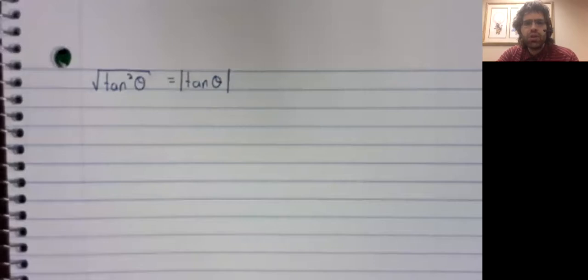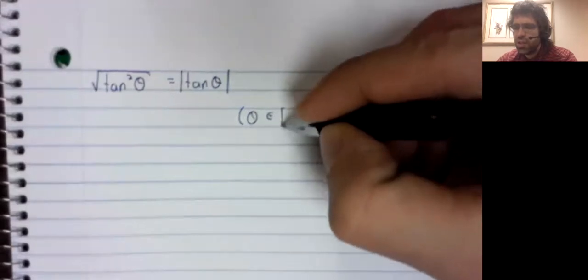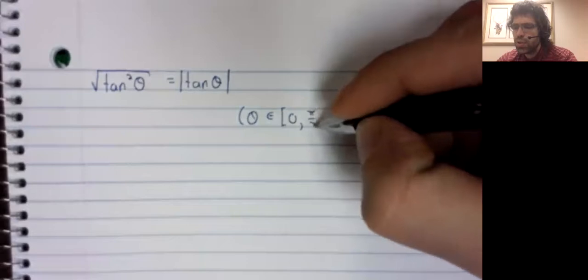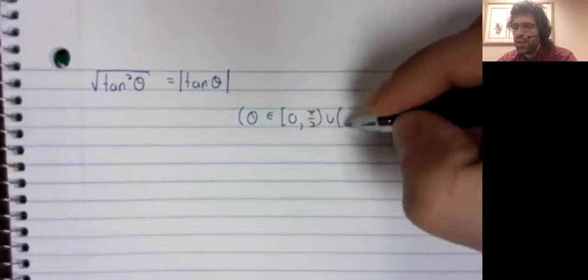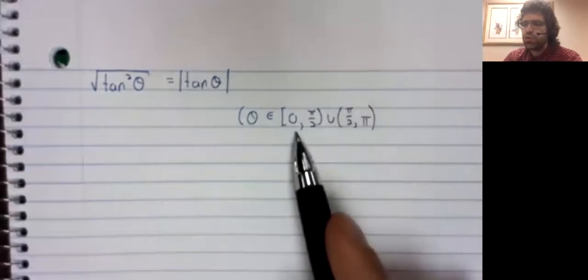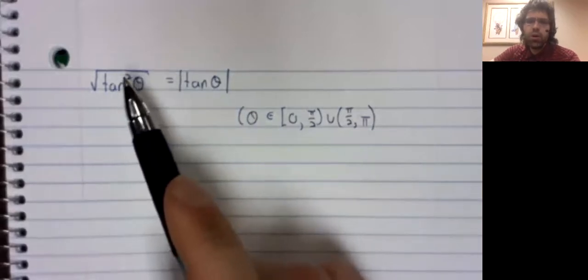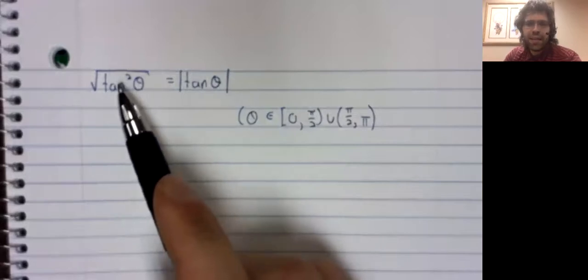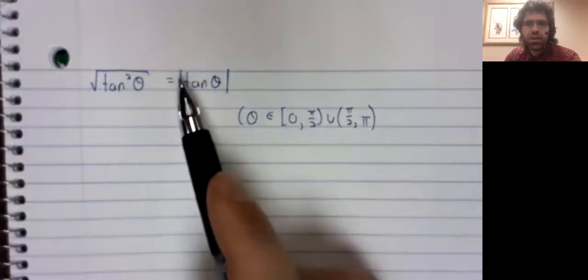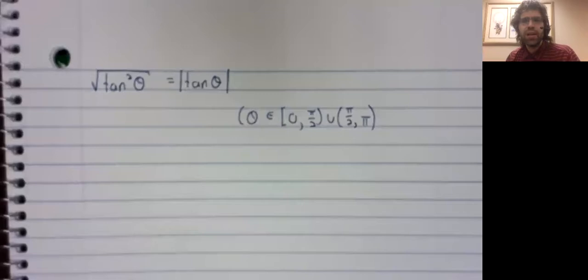Here, there are restrictions on theta. Theta, in particular, for technical reasons, theta is assumed to be in this interval. But these restrictions don't make the tangent positive. So it could be that the tangent is negative, in which case not having those absolute values would be a problem. It seems like a lot of sources just kind of ignore this.